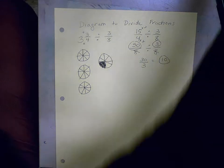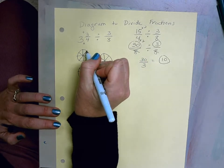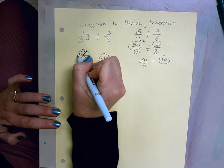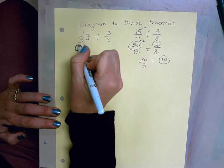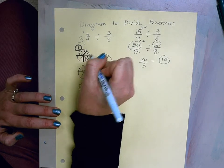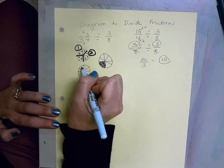So I'm going to divide it into sections of 3/8. So here's one group of 3/8: 1, 2, 3, that's one group. Here's another section of 3/8: 1, 2, 3, that's my second group. 1, 2, 3.